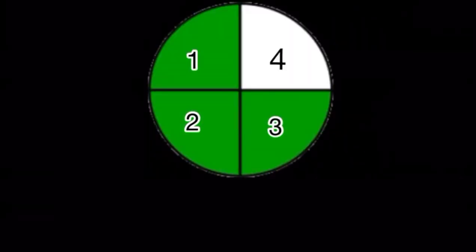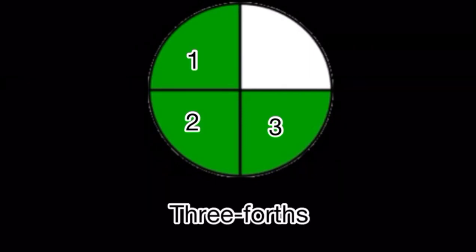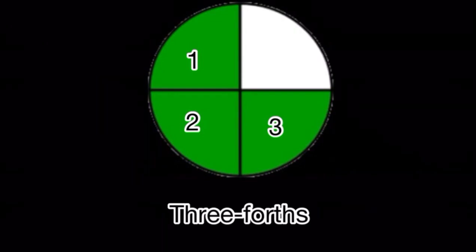Look at this circle. This circle has four equal parts. Three parts are colored, which represents three fourths. So the name of the fraction is three fourths. Now I will show you the fraction of the colored parts. This circle has three colored parts, so I will write three above the fraction bar.